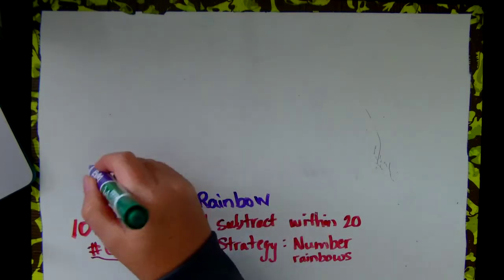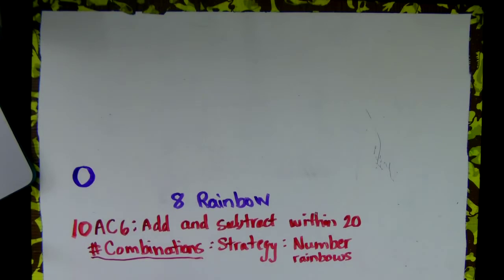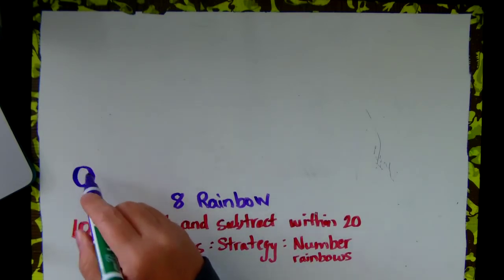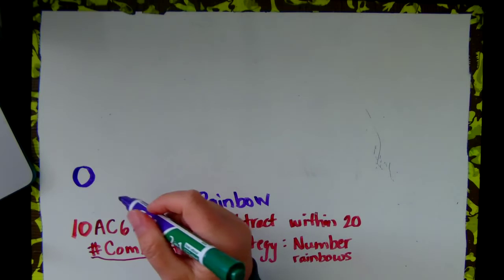When you make a number rainbow, you have to start your number rainbow with 0. So we are going to write our numbers from 0 to 8 and you can write with me. Ready?